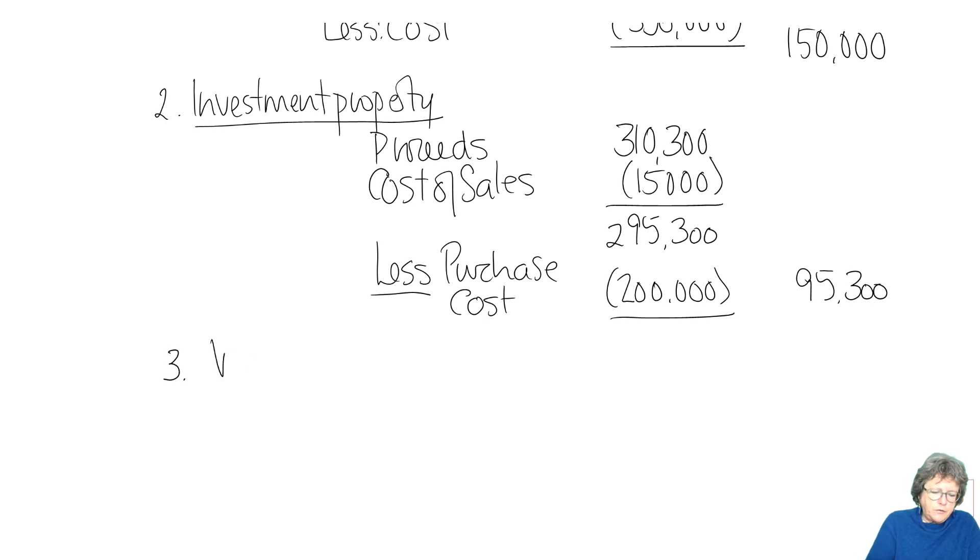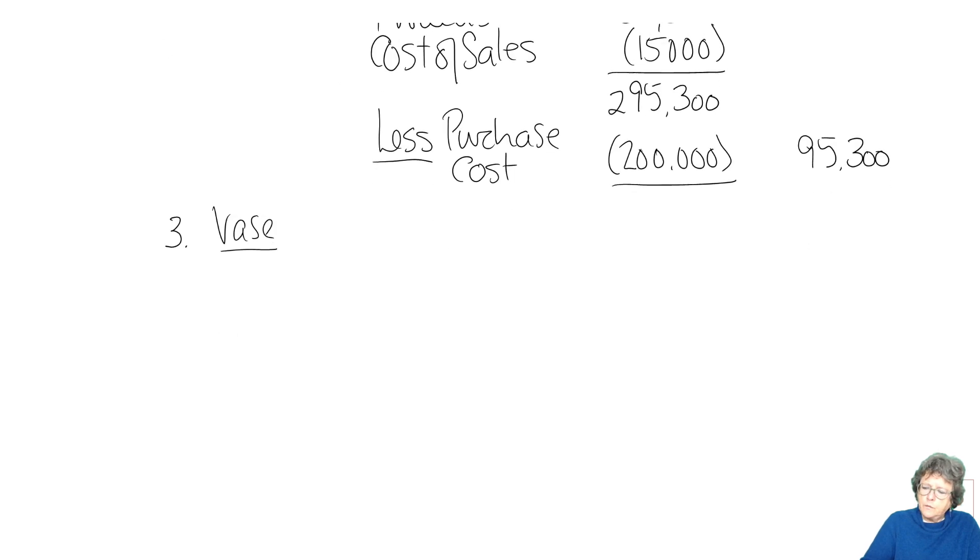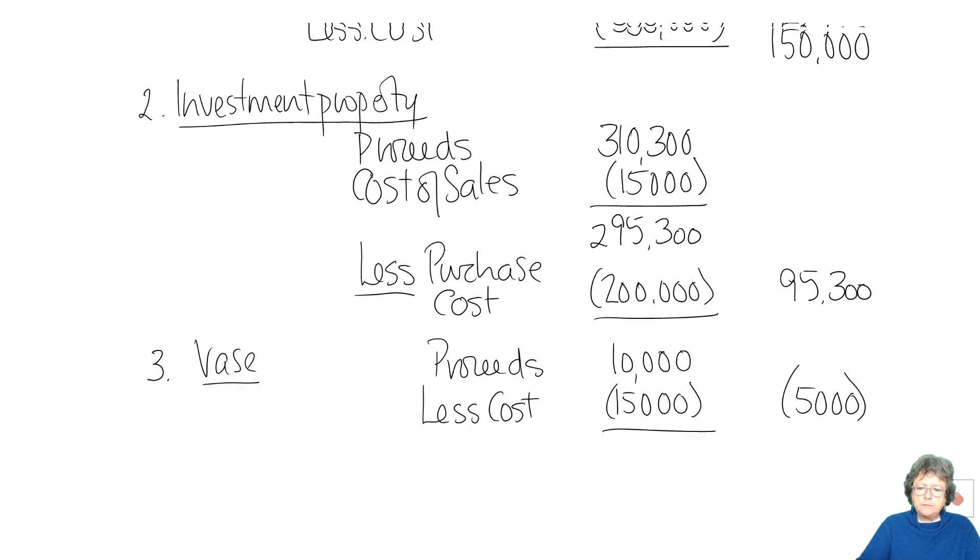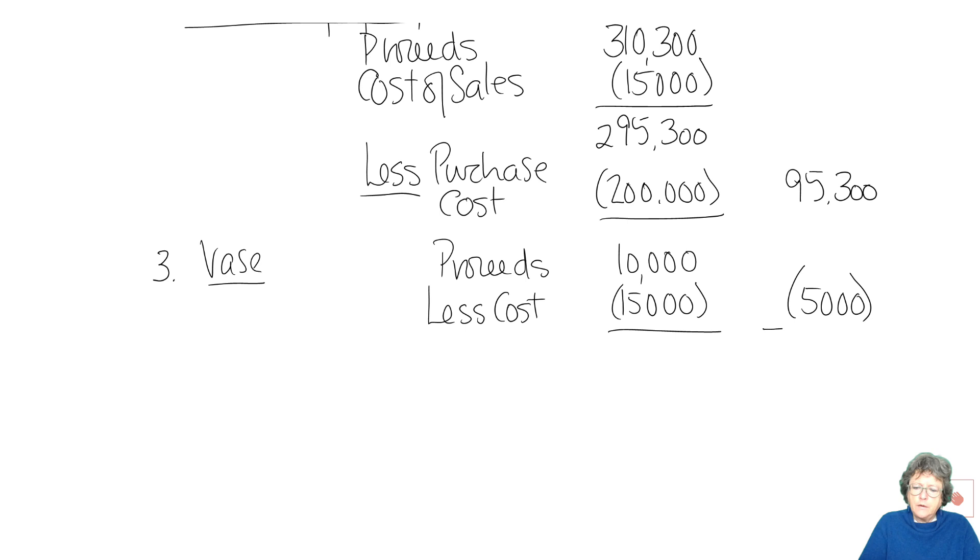The third one was the vase. Proceeds £10,000 less cost £15,000 which means we made a loss of £5,000. Now the rules with losses are that any loss in the year has to be set off in full against any gains in the year before you deal with losses brought forward. So by doing it in a pro forma like this you've actually dealt with that rule without even remembering how to do it. If you add all of those up, £150,000, £95,300 and take off the £5,000 you come to £240,300.